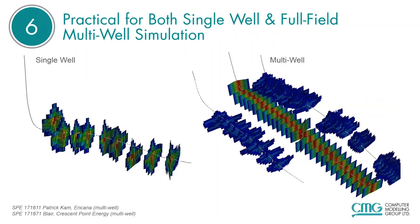The number six reason for using CMG in unconventional reservoirs: CMG is practical for use in both single well and full field multi-well simulation. Many times a single well model is used to start off a simulation for a fine-grain assessment of the asset before moving to a multi-well field model. Both play a very important role in the reservoir simulation equation, and I want to make sure end users understand CMG is capable of being used in both capacities. Two SPE papers in the lower left go into details of using CMG in a multi-well format.